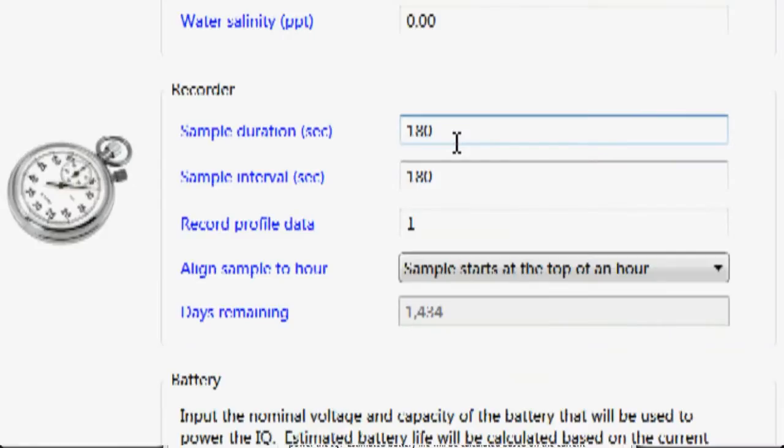Next we have the recorder. With the recorder, this is where we actually set up the instrument to collect data. We set first the sample duration, that is how long do we want to collect the data. In this case, we have it set up for 180 seconds, which is three minutes. The next thing we set is a sample interval. In this case, the sample interval is how often we want to collect that data. It's also set to 180 seconds. When I have this type of setting, the instrument will actually literally run continuously.